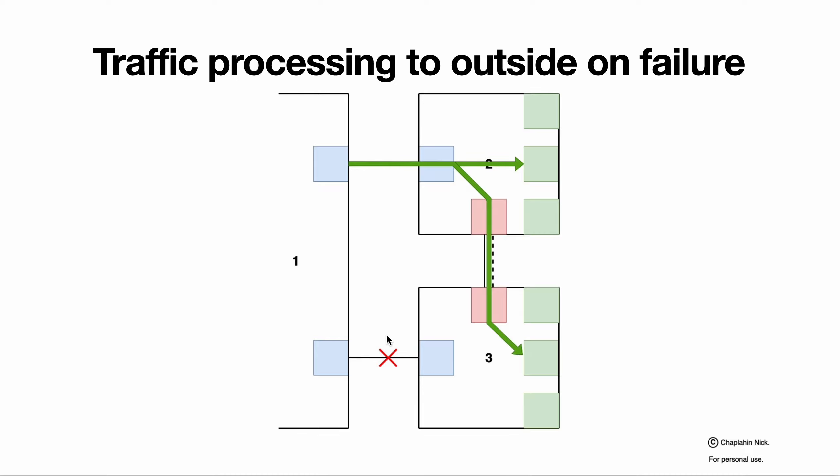What happens on link failure? Regular LAG functionality. Port goes down, it is removed from balancing algorithm.